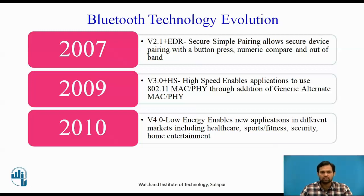This latest version 4.0, Bluetooth Low Energy, invented in 2010, is used for low power consumption. It is generally used in healthcare products, sports, fitness, security, or home entertainment. For example, today's smartwatches provide functionalities such as heart rate and calories burned for a particular person. All this data is recorded in the smartwatch and you can view it on your smartphone with the help of Bluetooth Low Energy.